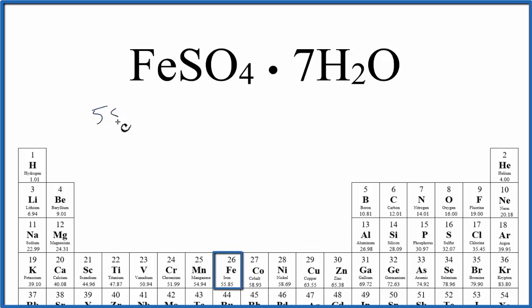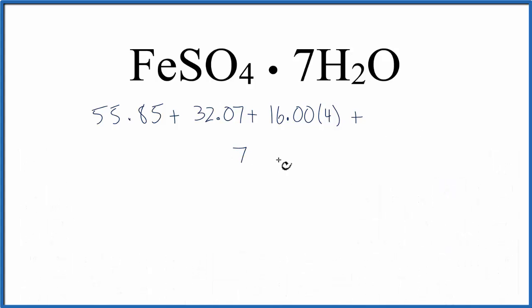Iron, 55.85 grams per mole, sulfur, 32.07, plus oxygen, 16.00. And we have four oxygens, so we'll put a four after that, plus, let's put this down here, seven times, hydrogen's 1.01, and we have two of those, so that'd be 2.02, plus the one oxygen, 16.00.